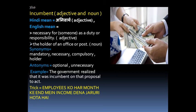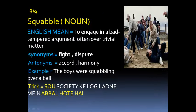Example: 'The government realized that it was incumbent on them to act on that proposal' — meaning the government realized it was necessary to act on that proposal. Memory trick: employees ko har mahine ke end mein income dena zaroori hota hai — income rhymes with incumbent — so incumbent means necessary or obligatory.